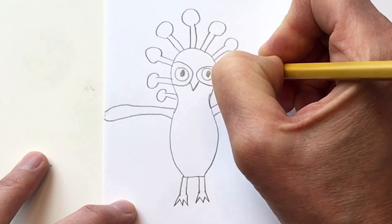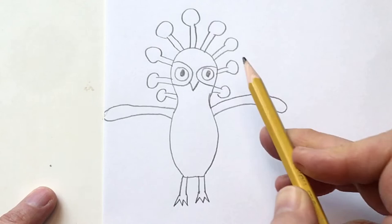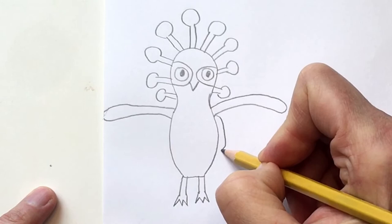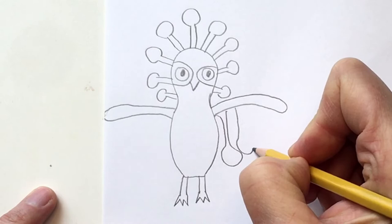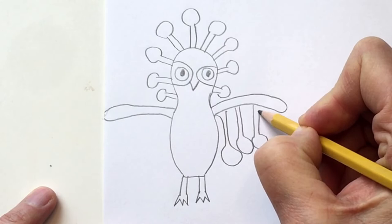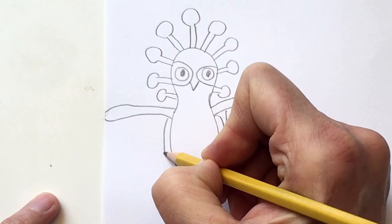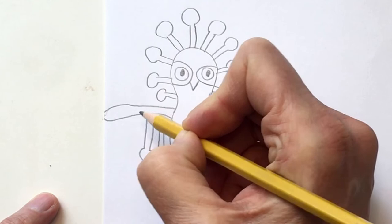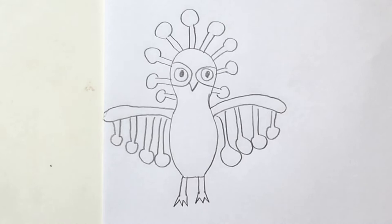Not only does she put them on the head, she also puts them on the wings. She will come down, make the ball shape, come down, make the ball shape. And so there is one style of owl. Let's try another one now.